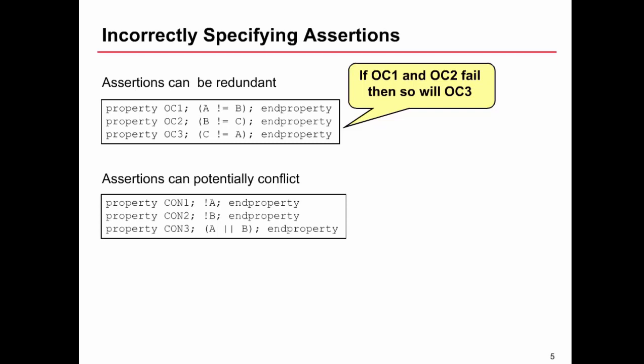Now, the compiler doesn't detect this. It's not going to tell you, by the way, did you realize you described conflicting properties. It won't do that. If you're using formal verification, and these were assumptions and not assertions, then there is something known as a vacuity check, which does detect this.